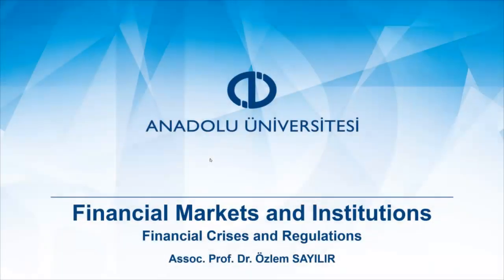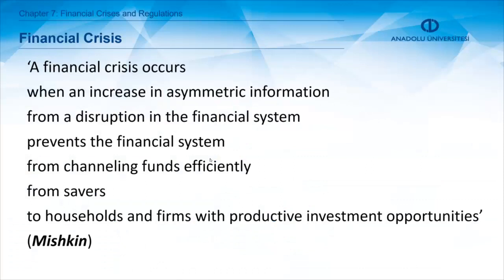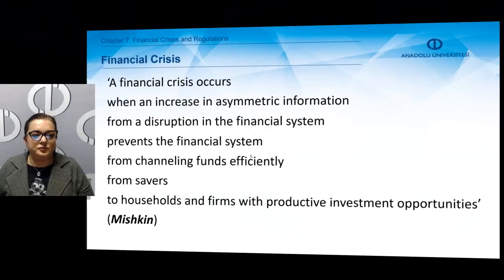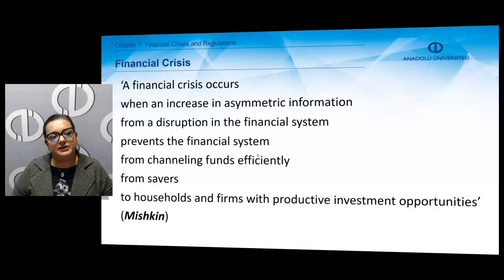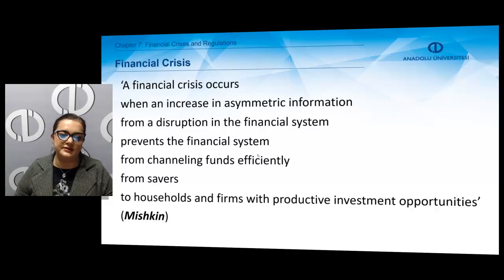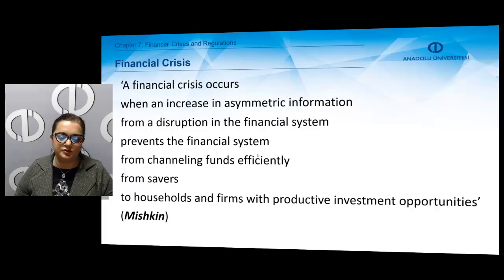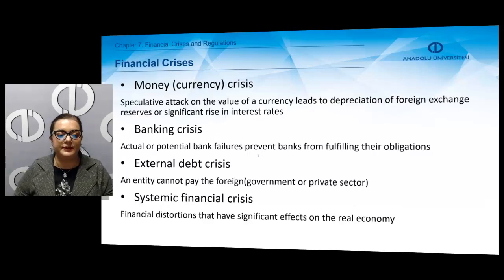We're going to take a look at the last chapter of financial markets and institutions, which is about financial crisis and regulations. Let's first define what a financial crisis is. According to Mishkin, a financial crisis occurs when an increase in asymmetric information from a disruption in the financial system prevents the financial system from channeling funds efficiently from savers to households and firms with productive investment opportunities.